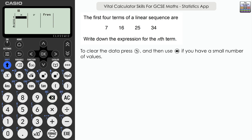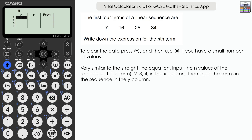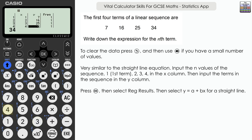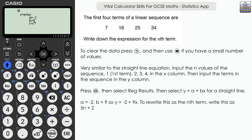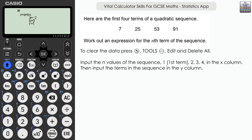We can use a similar process to find the nth term of a linear sequence: 7, 16, 25, 34. In the X column input the term positions 1, 2, 3, 4. In the Y column input the sequence values 7, 16, 25, 34. Press execute, then reg results with the straight-line equation. We get a = −2 and b = 9, with r = 1. Rewriting: y = 9n − 2, so the nth term is 9n − 2.